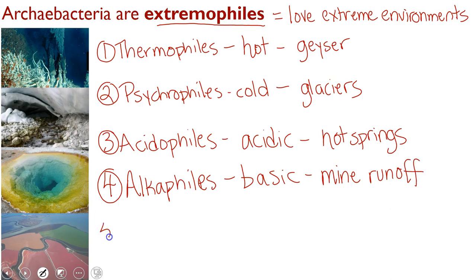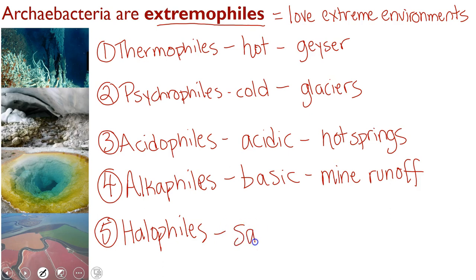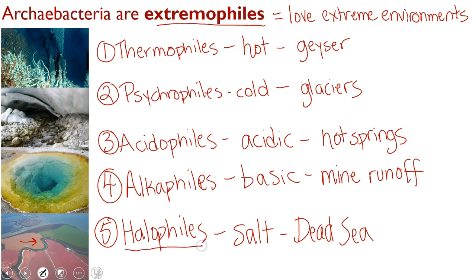Our last group of extremophiles is our halophiles. Halophiles like to live where it is really salty — saltier than the ocean. So these are places like the Great Salt Lake, the Dead Sea, or places where they are farming or harvesting salt. As you fly over some places, you will see these big pink patches. Those are places where they've gathered seawater together and are letting it evaporate. A lot of these halophiles actually make a red pigment, so when the salt starts to concentrate, the halophiles start growing and these big fields end up looking pink.